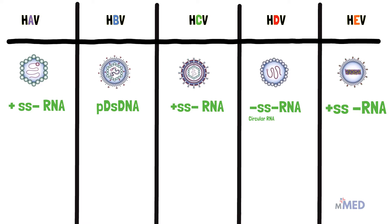Next we are going to learn if the infection caused by each of these viruses is acute or chronic. An acute infection is described if you can get rid of the virus from the body — usually this lasts less than six months in duration. If it's greater than six months of duration and you're still infected, it's more of a chronic infection.